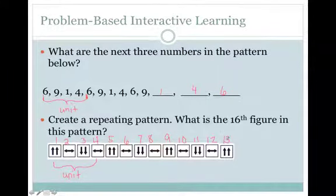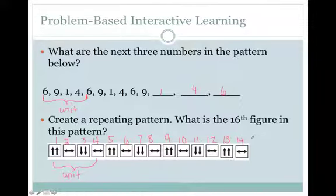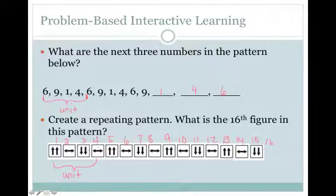What figure follows arrow up? What would be the fourteenth? Arrow to the side — it would be the next figure that follows arrow up. And what would be the fifteenth figure? You go back to your unit and find which one follows arrow to the side. And what would be the sixteenth figure? You go back to your unit and it would be arrow to the side. And that's how a unit helps you with a repeating pattern.